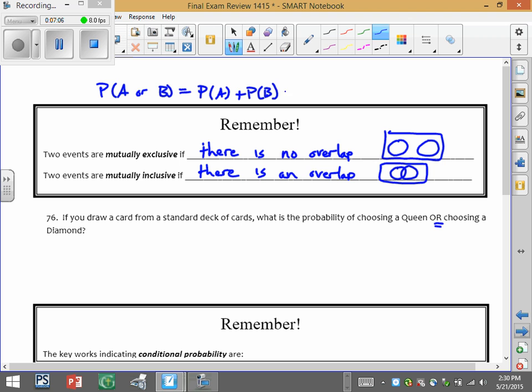But with the or, remember, there's always a chance that there's an overlap. But we want to take out the overlap so we're not double counting cards. So is there a queen that's also a diamond? Well yes, there is. There's the queen of diamonds.